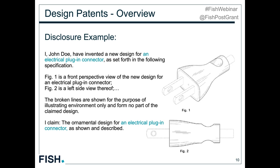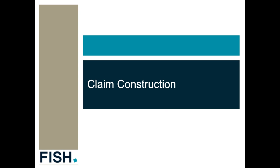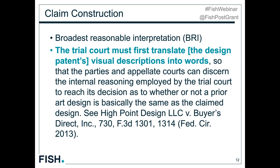Given that the claims and scope of design patents are defined by drawings, that puts the PTAB in a different position with respect to claim construction. In the context of an IPR, the PTAB must construe the claim, and to allow appellate review by the Federal Circuit, they must come up with a verbal explanation of what they think the design scope is. They do apply the broadest reasonable interpretation standard, but the key difference is that the trial board must essentially translate the design's visual description into words.